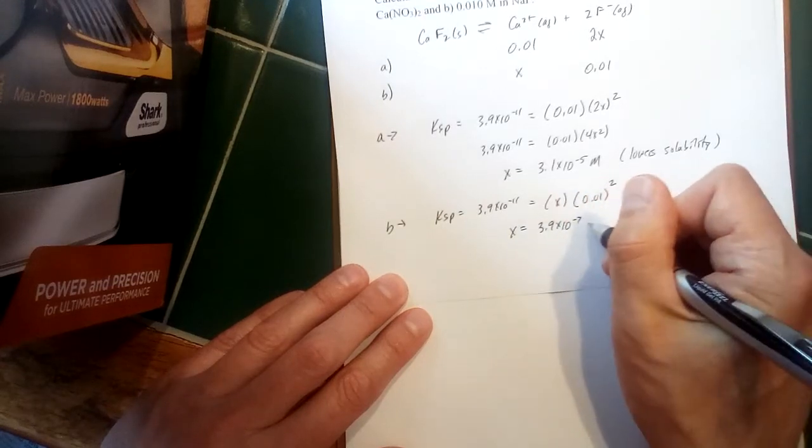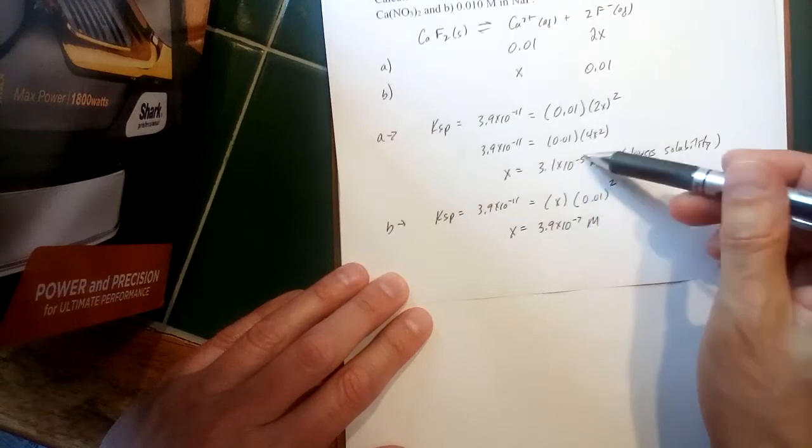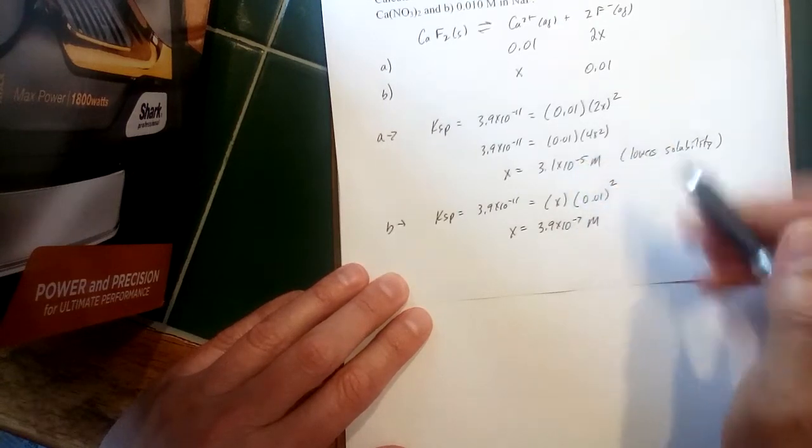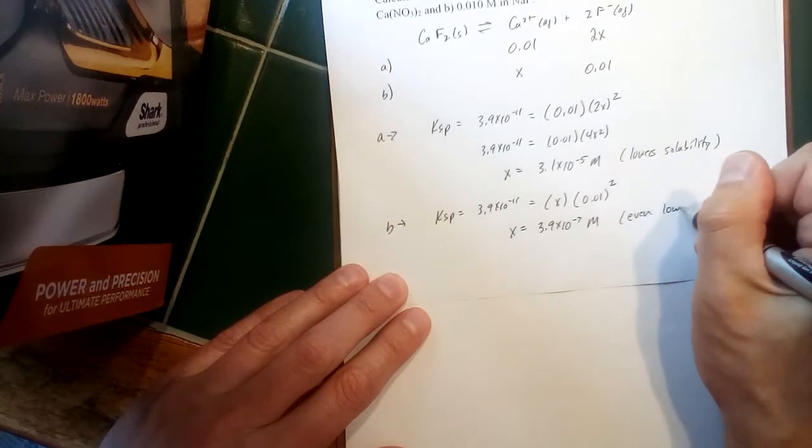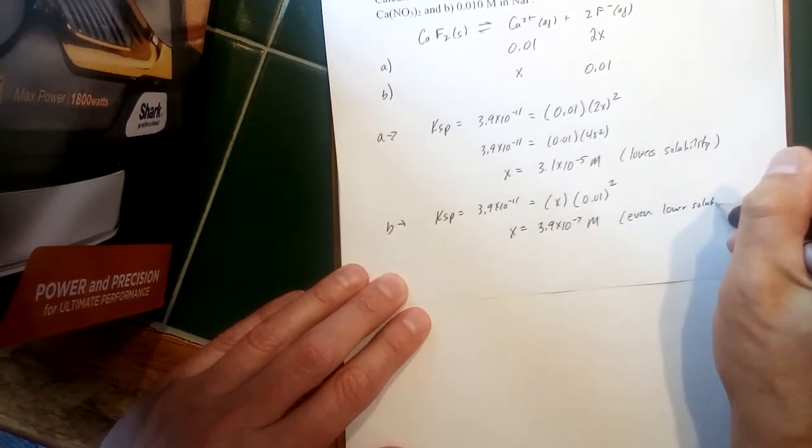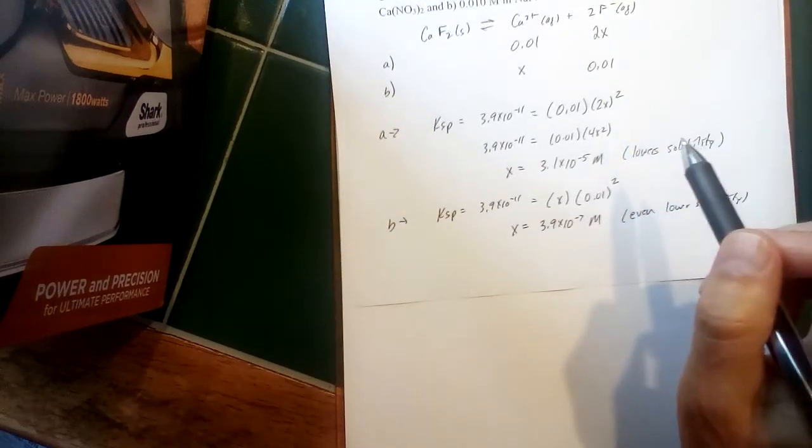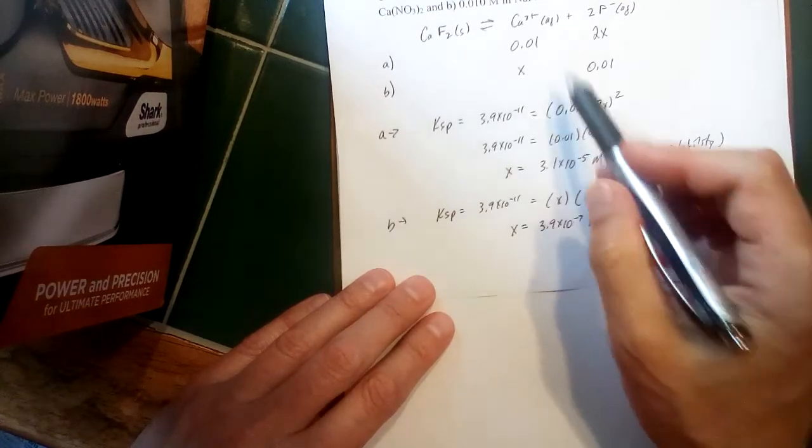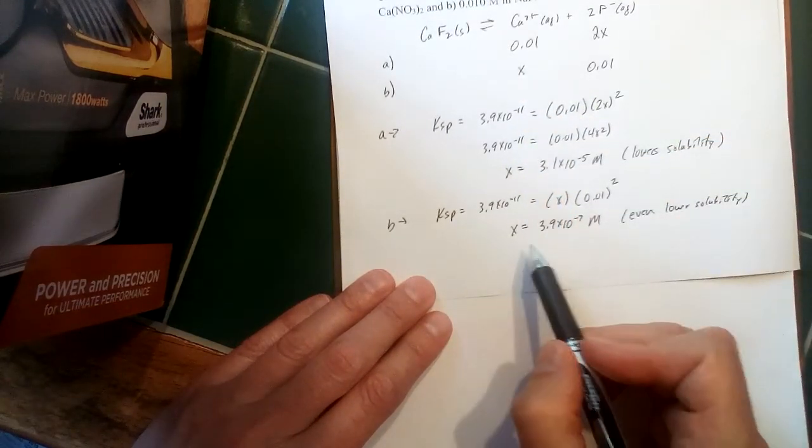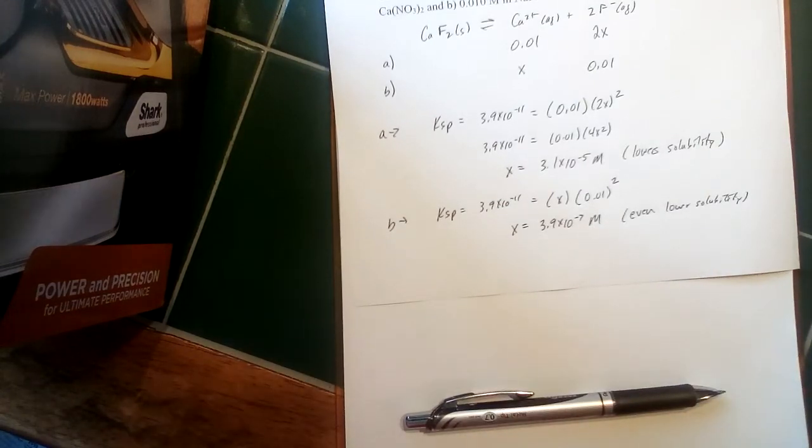So even lower—two orders of magnitude about lower than the calcium version—so even lower solubility. So what you can see here is how the squared term affects how fluoride ion affects the solubility to a greater extent than added calcium ion. And with that common ion we get even less of the solid dissolving.